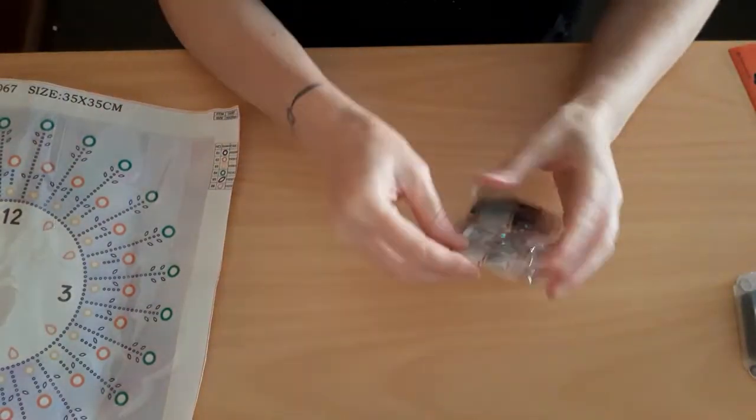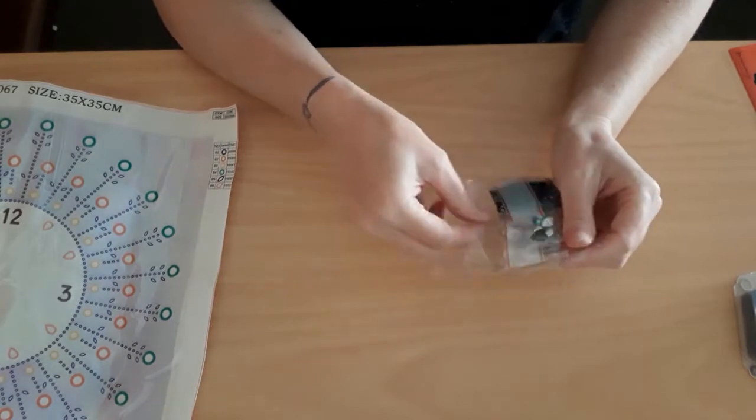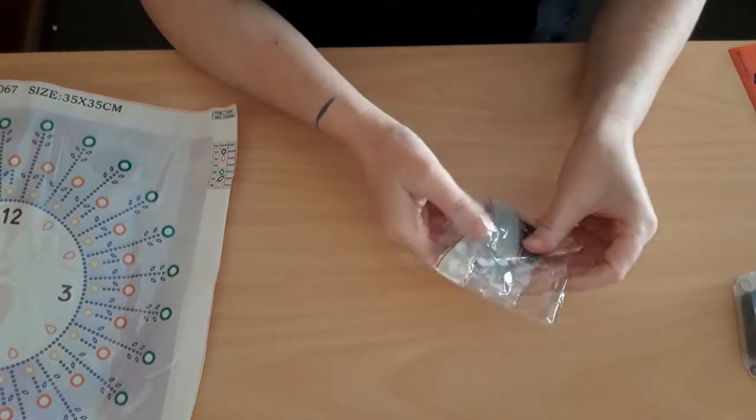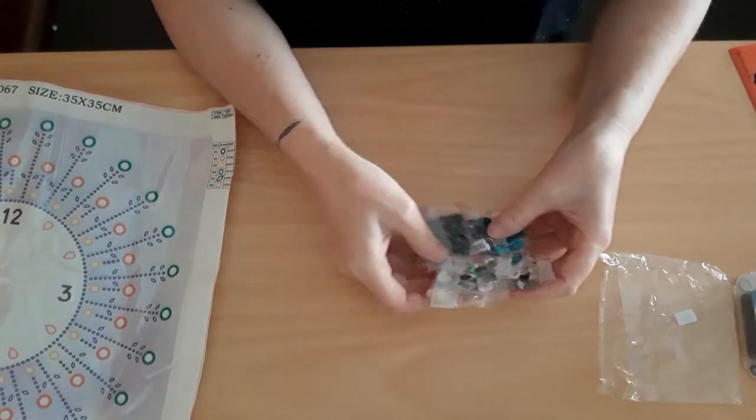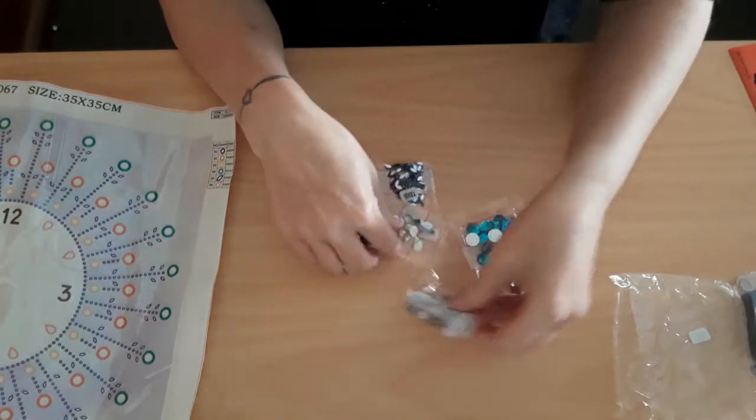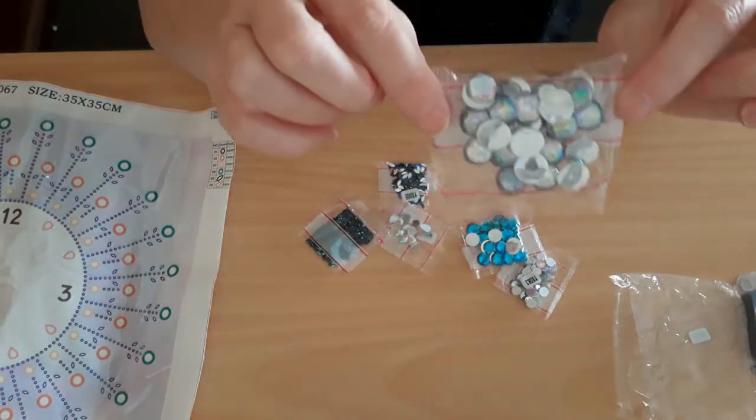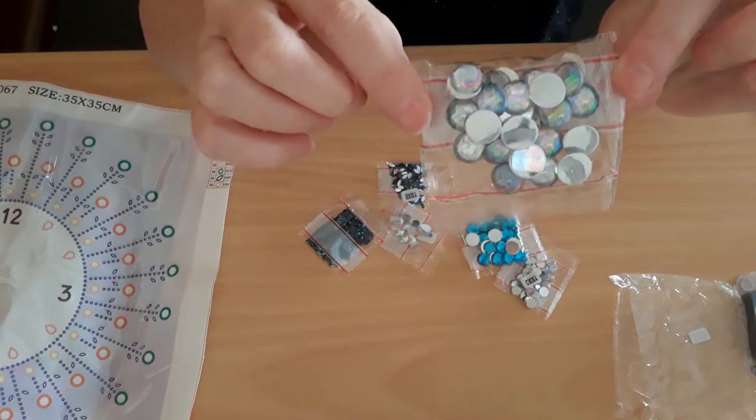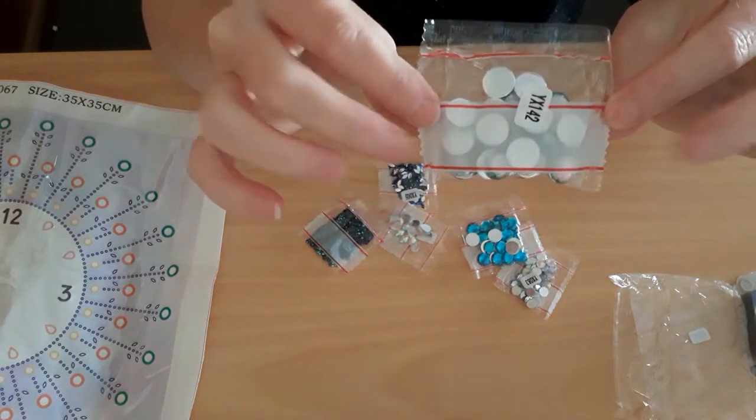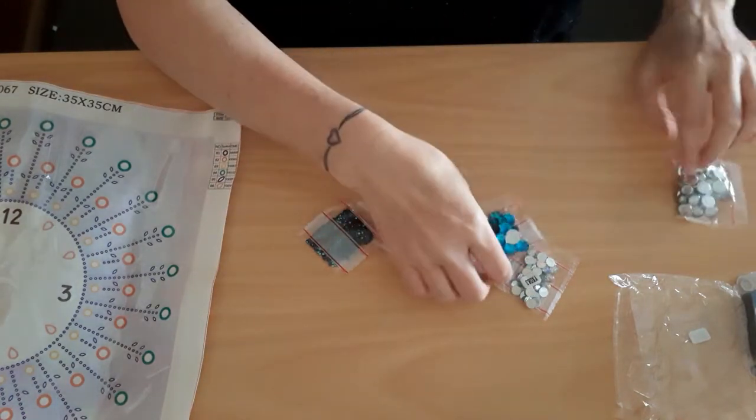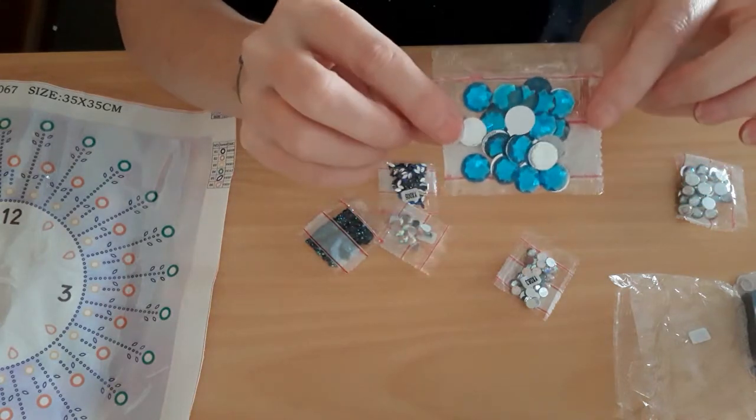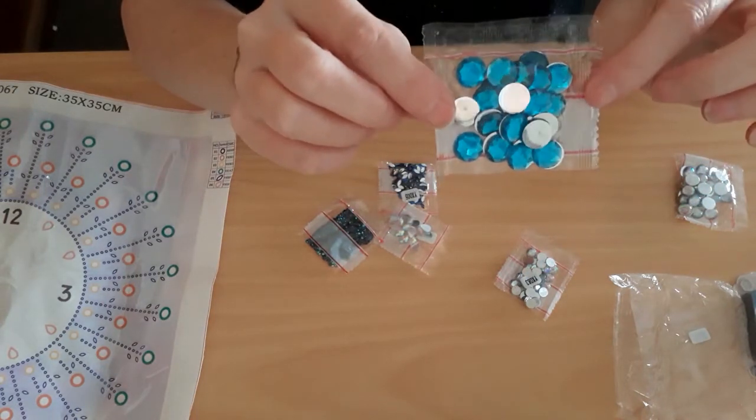The drills that you get in this kit, got six different colors. So you've got these large AB circles. There you've got the same ones but in this beautiful blue color. Gosh I love this color. So pretty.